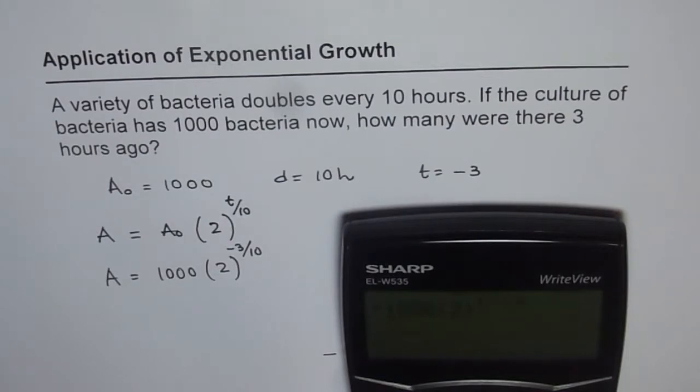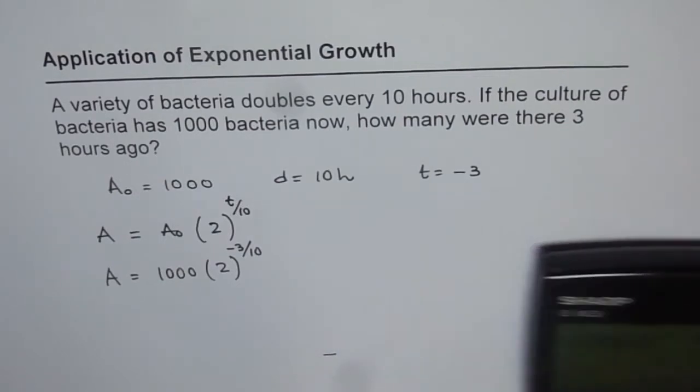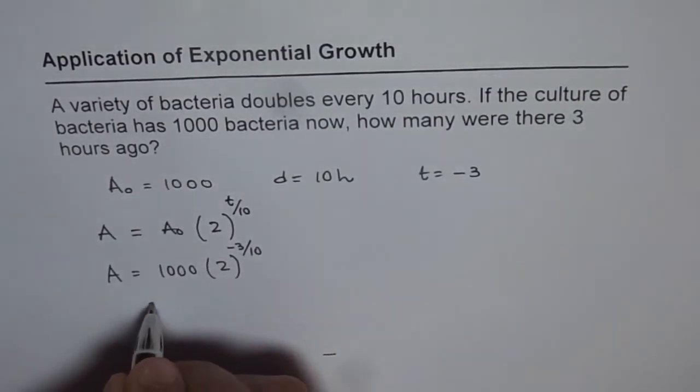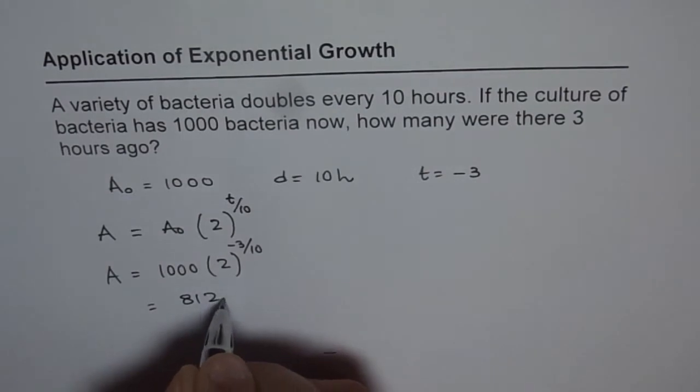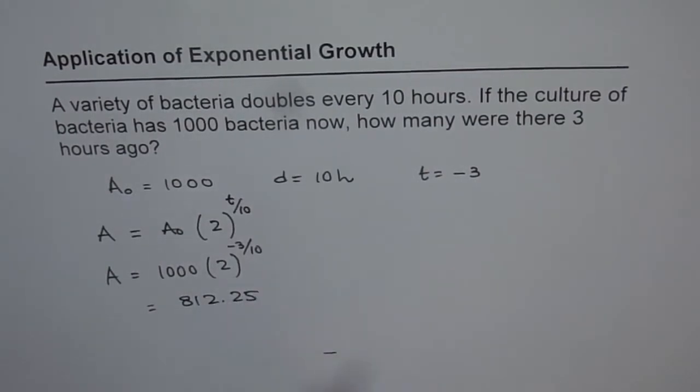Minus 0.3, bracket close, equals. It gives us 812.25. This equals 812.25. We can say there were approximately 800 bacteria or 812 bacteria 3 hours ago.